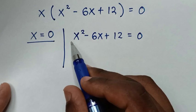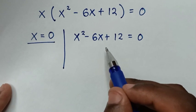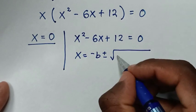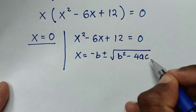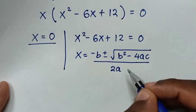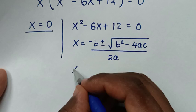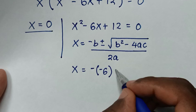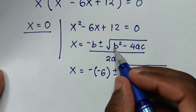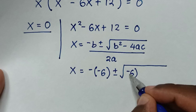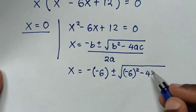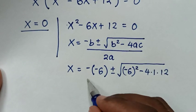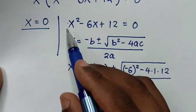From this quadratic equation, to find the value of x we will use the quadratic formula: x = (-b ± √(b² - 4ac)) / 2a. Here b = -6, a = 1, and c = 12. So it will be x = (-(-6) ± √((-6)² - 4·1·12)) / (2·1).